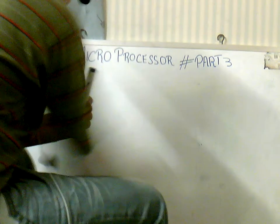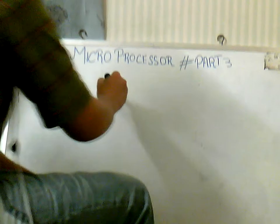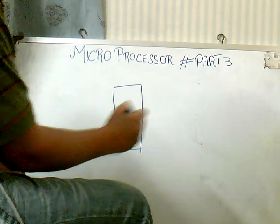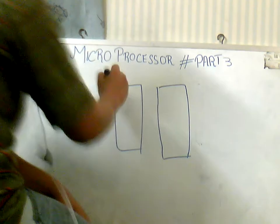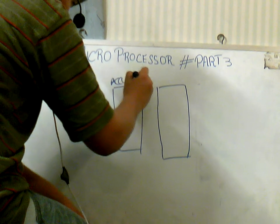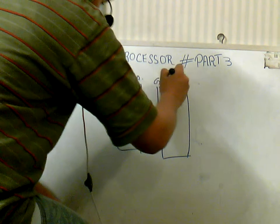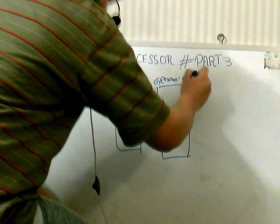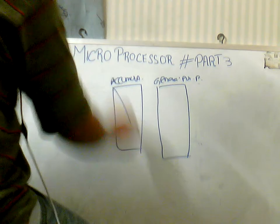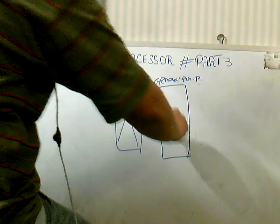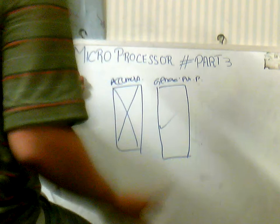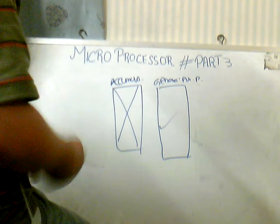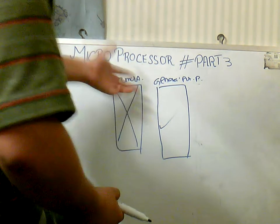Now what is a general purpose register? This is the accumulator and this is the general purpose register. In case the accumulator is not working, the general purpose register comes into action. The general purpose register does the same work as the accumulator — it also holds the results of calculations and displays the result on the output screen.